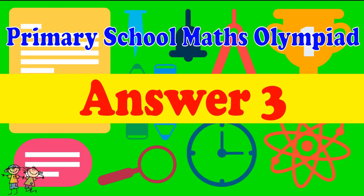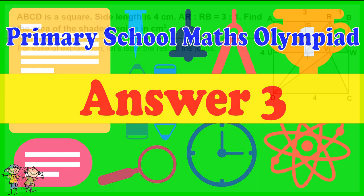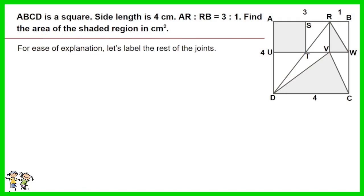Answer for question 3: For ease of explanation, let's label the rest of the joints. Let AS equals Y. Thus ST equals Y and SR equals 3 minus Y.